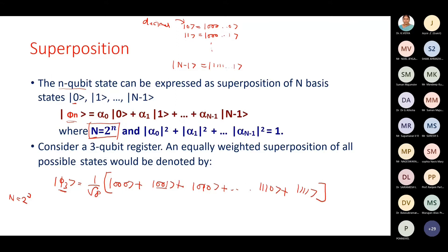With three qubits, we can have 2 to the power 3 states simultaneously represented using this phi-3 system. What is the coefficient of the triple-zero state? The coefficient is 1 by square root of 8, so each state has the same coefficient. The probability of getting 000 on measurement is the mod square of the amplitude — so 1 by 8. Similarly, what is the probability of getting 110? The coefficient is the same, so the probability is 1 by 8.